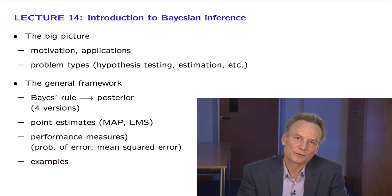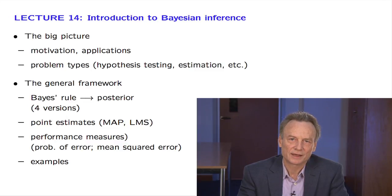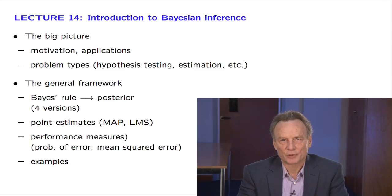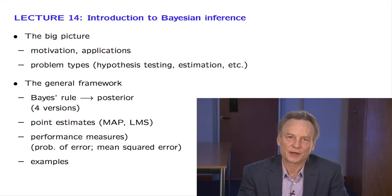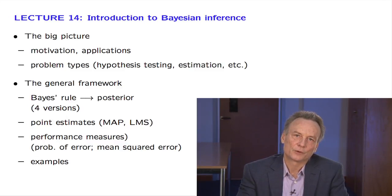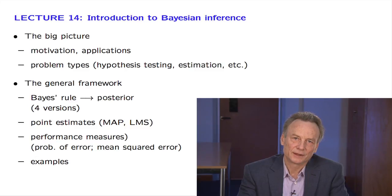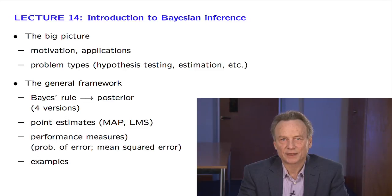Given any particular method for coming up with a point estimate, there are certain performance metrics that tell us how good the estimate is. For hypothesis testing problems, the appropriate metric is the probability of error, the probability of making a mistake. For problems of estimating a numerical quantity, an appropriate metric that we will be using a lot is the expected value of the squared error.